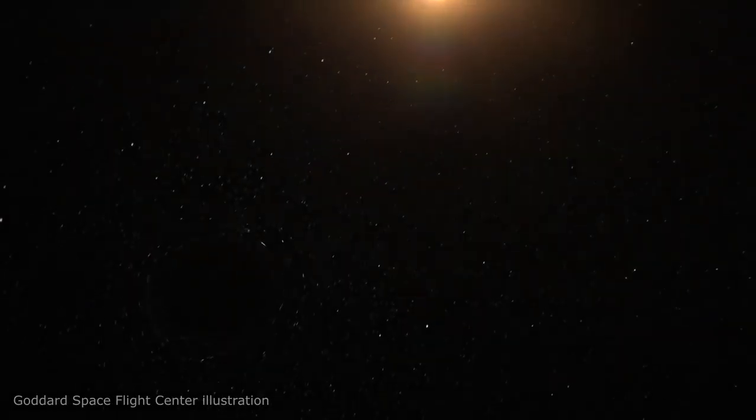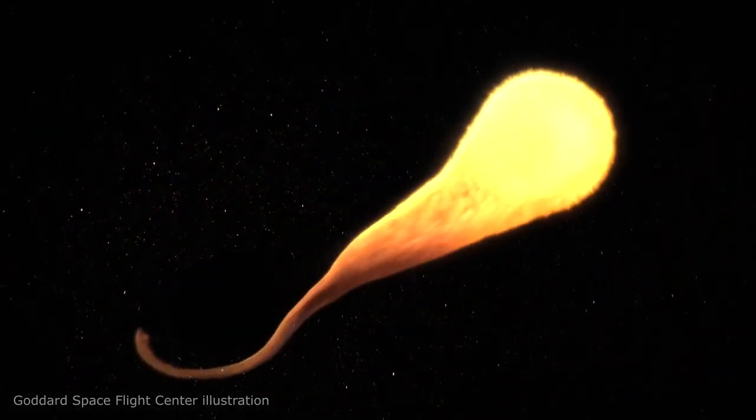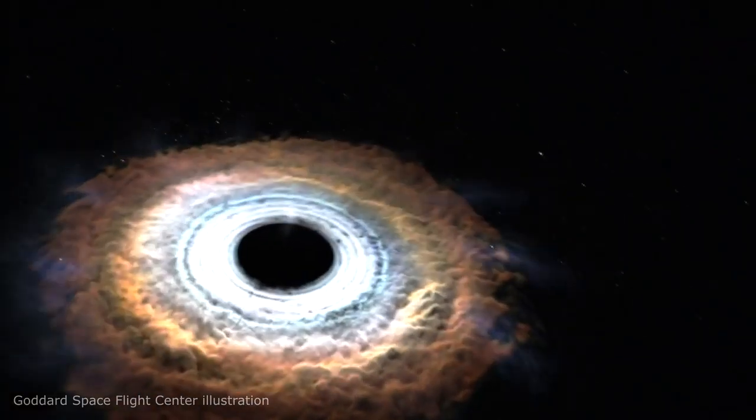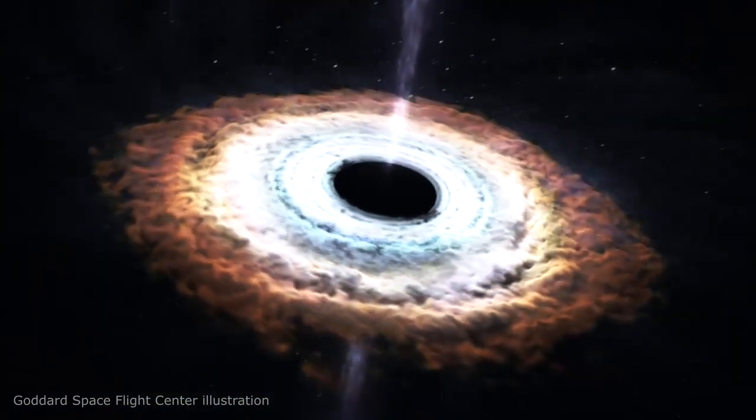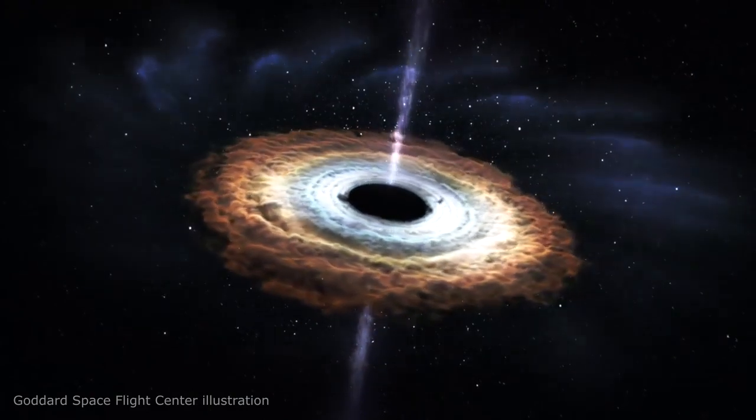One of the things all rotating black holes have in common, besides the fact that we can't see them, is that matter flows in via an accretion disk. The exact mechanism is not yet fully understood, but we know that gamma ray jets shoot out at the poles carrying a percentage of the falling matter with it at speeds approaching the speed of light.